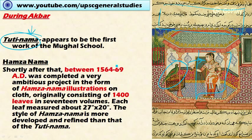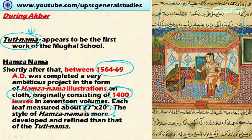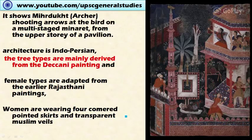Later, the bigger work Hamza Nama was commissioned during 1564 to 1568. Hamza Nama contains illustrations painted on cloth, originally consisting of 1,400 leaves — that is, 1,400 paintings — compiled into 17 volumes. Each leaf measured about 27 by 20 inches. The style of Hamza Nama is more developed and refined than that of the Tutinama. Please remember these are collections of paintings, not individual works.